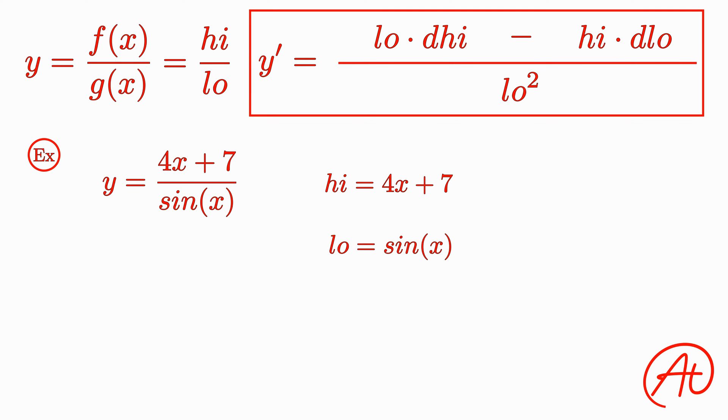Again using the power rule, we find that d high is equal to 4. Then with our trig derivatives, we know that d low is equal to cosine of x.